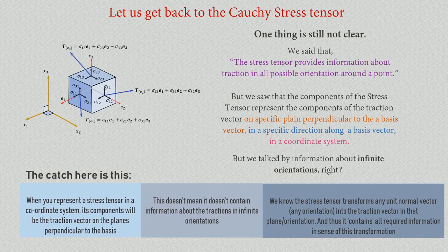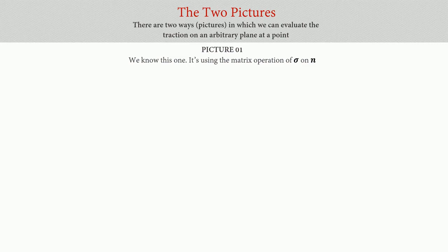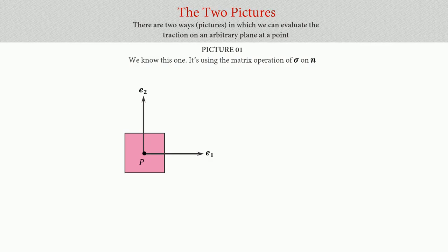Now we want to look at two different pictures of this coordinate transformation. As we change coordinates, the components change. We'll see two ways to evaluate traction on an arbitrary plane at a point. Picture one is what we have been discussing: we simply use the relation t = sigma · n. For this explanation, let's use a 2D example.